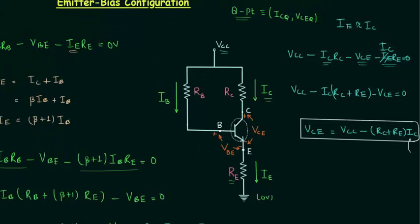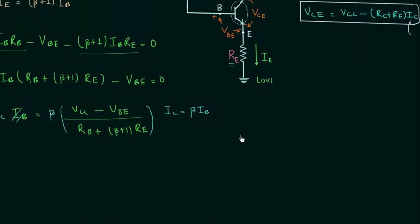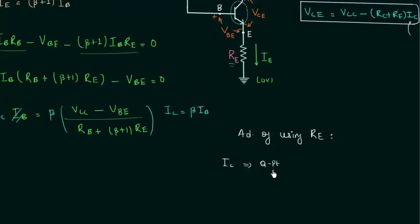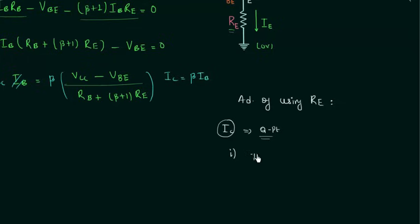The next topic is the advantage of using emitter resistance RE. We don't want the operating point to change. If collector current IC changes, the Q-point will also change, since IC is one of its coordinates. The collector current will change due to two things. The first is temperature: if temperature increases, the collector current also increases, because IC equals β·IB plus (β + 1)·ICBO.